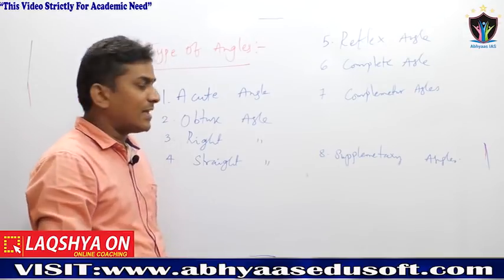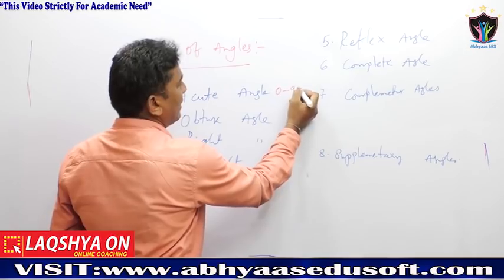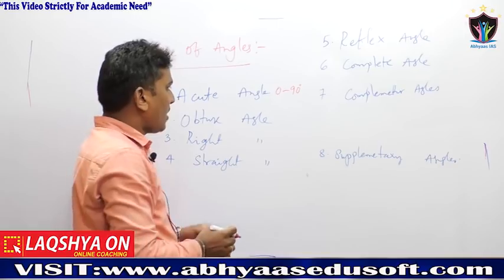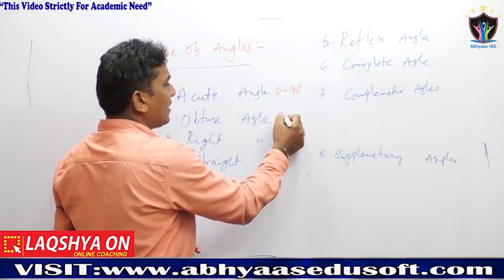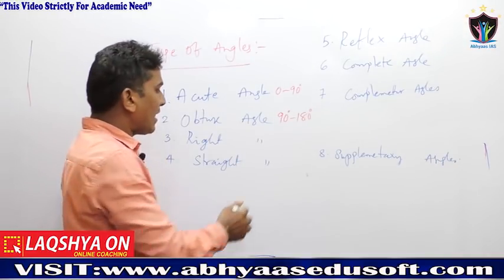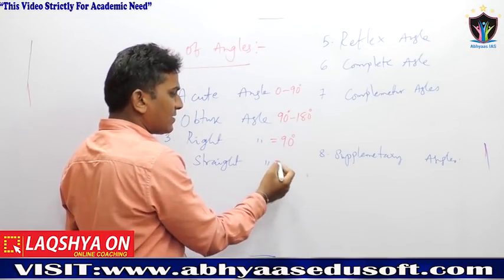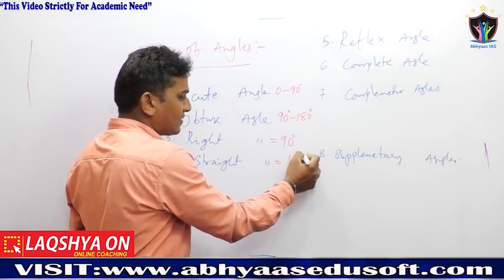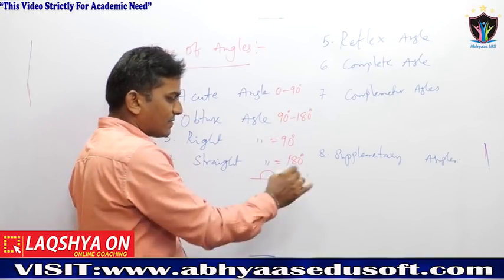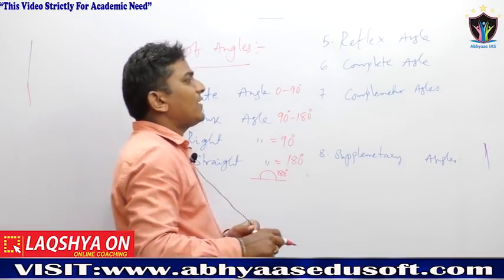An acute angle is in between 0 to 90 degrees. An obtuse angle is in between 90 degrees to 180 degrees. A right angle is equal to 90 degrees. A straight angle is equal to 180 degrees — on a straight line the angle is 180 degrees, which is why we call it a straight angle.